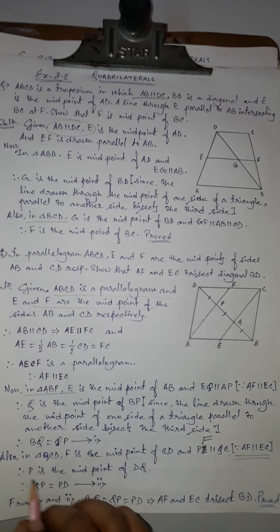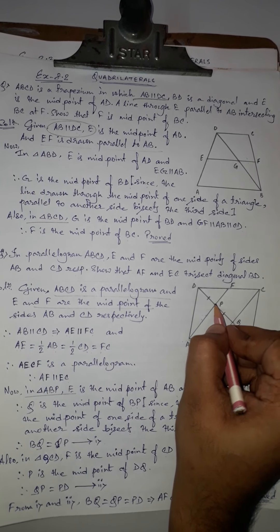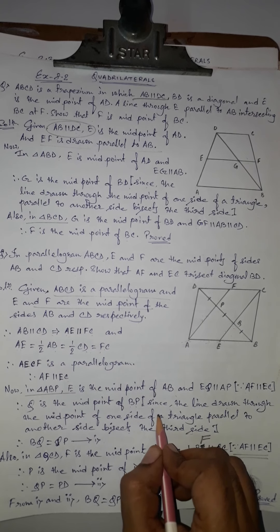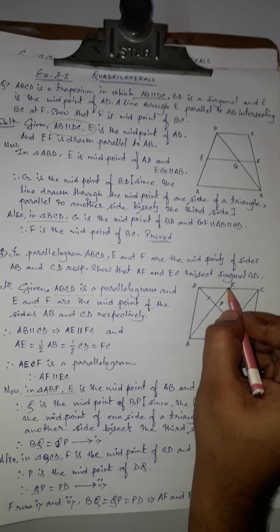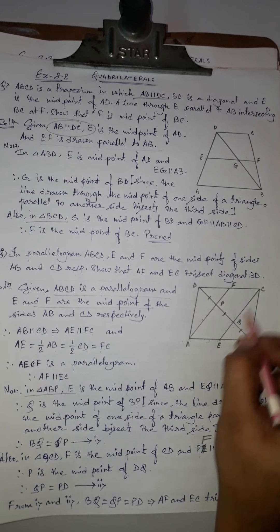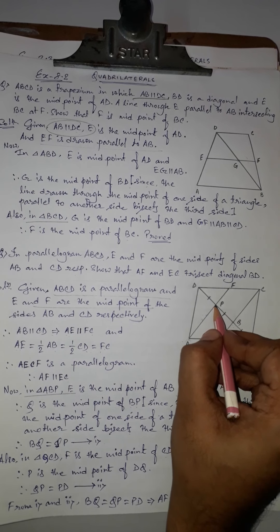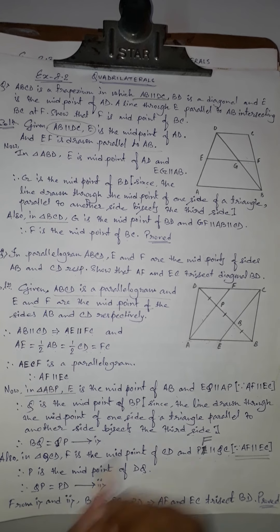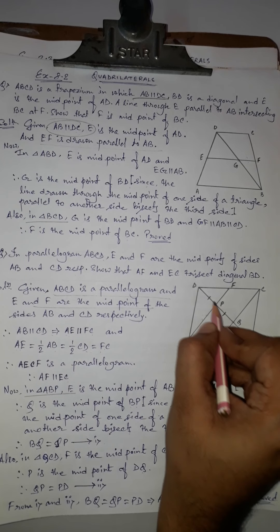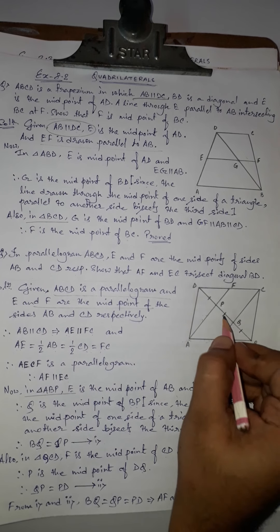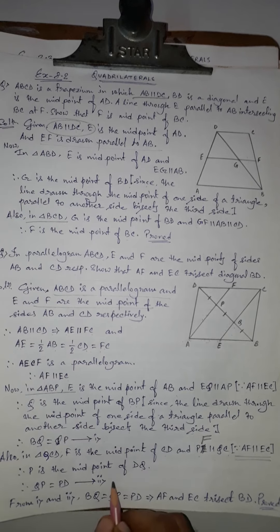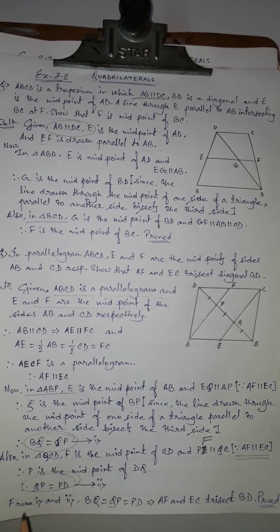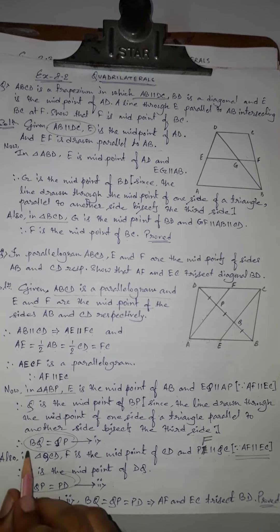By the converse of the midpoint theorem, P is the midpoint of DQ. Therefore QP equals PD — this is equation (2).